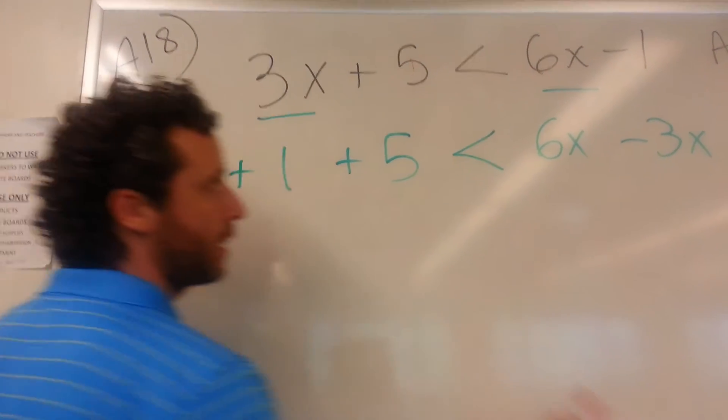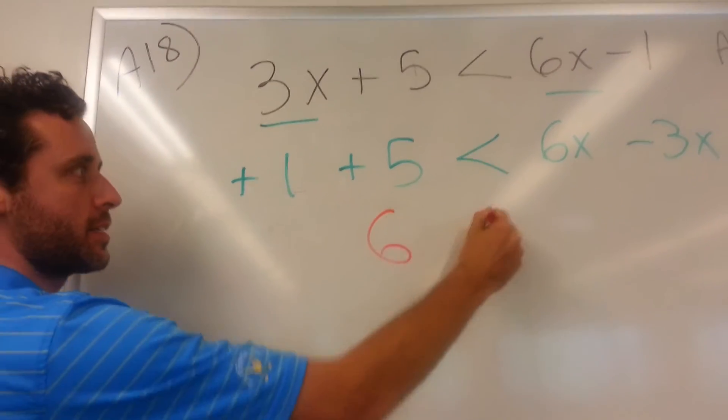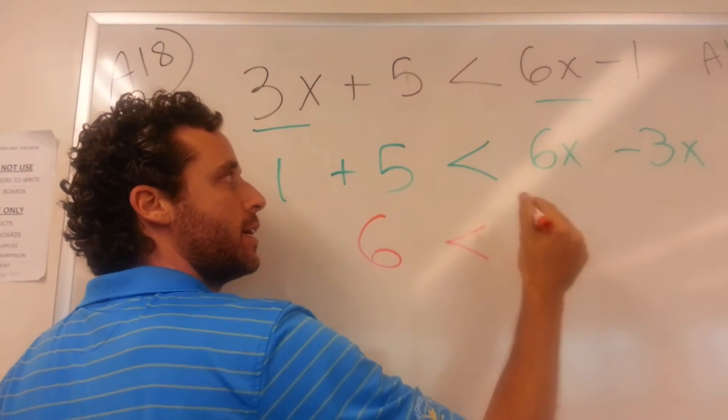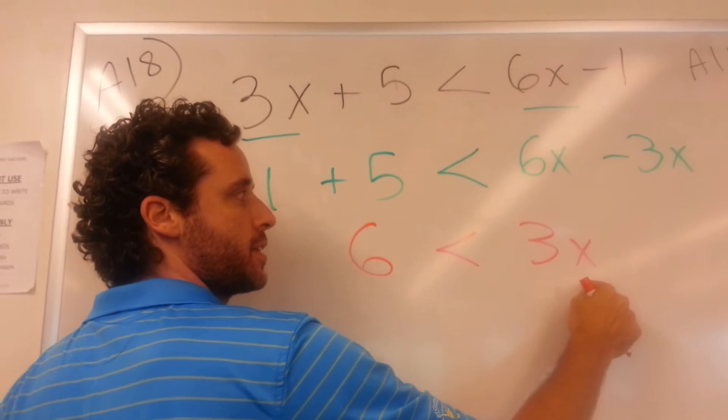Now it's a matter of combining like terms. We're going to end with five plus the one. That's going to give us a positive six. And then six x minus three x is three x. Just do the six minus the three, the x stays the same.